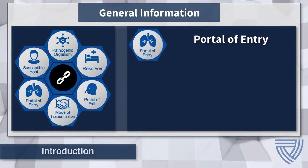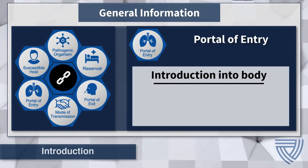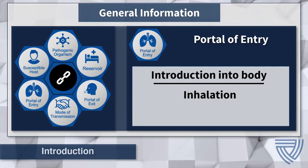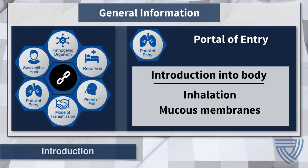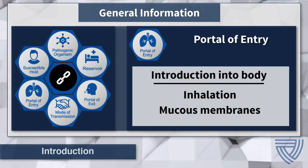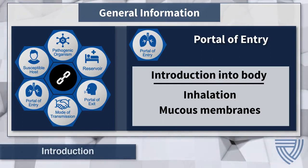The portal of entry is the path in which a pathogen enters a new host. This can be through inhalation, when a person inhales the pathogen into their body, or through mucous membranes by way of hand-to-face contact. Health care workers wearing personal protective equipment that offers respiratory protection, preventing the inhalation of an infectious pathogen, is one way the chain of infection can be broken at the portal of entry.